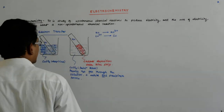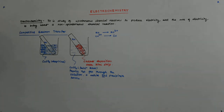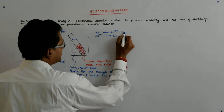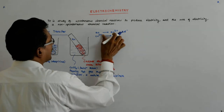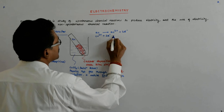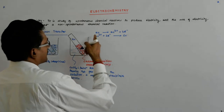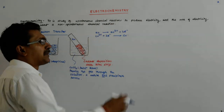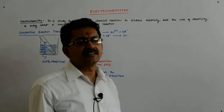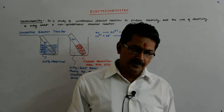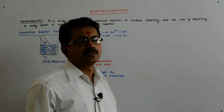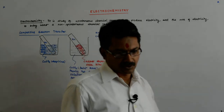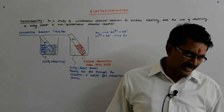What does this tell us? It tells us that Zn becomes Zn²⁺ by giving some electrons, and Cu²⁺ becomes copper metal by accepting those electrons. Both are metals.